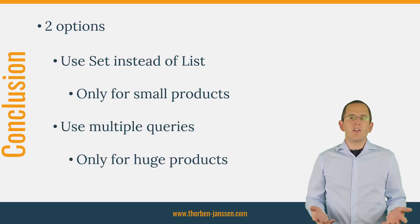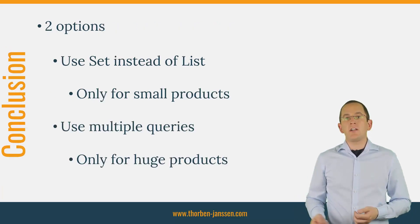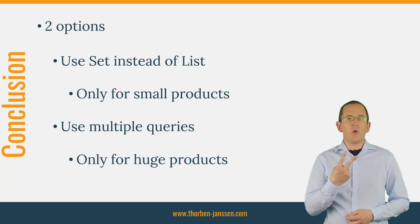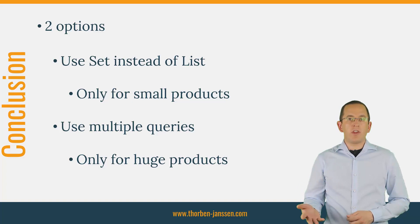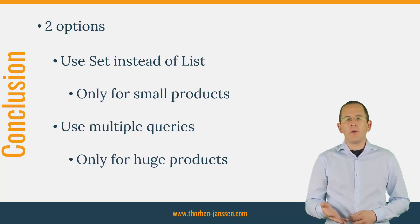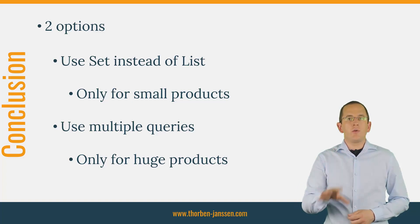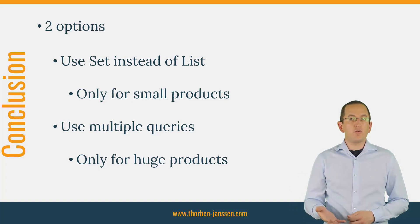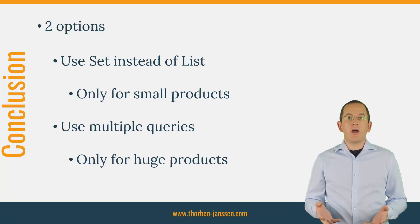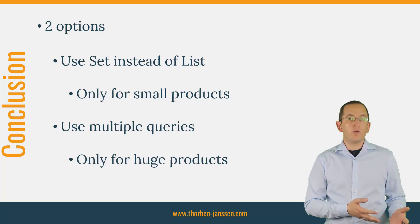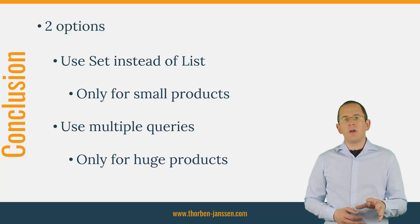As you have seen in this video, you can solve Hibernate's MultipleBagFetchException in 2 ways. You can change the data type of the attribute that maps the associations and retrieve all information in one query — the result of that query is a product, and as long as this product doesn't get too big, this approach is simple and efficient. Or you can use multiple queries to fetch the required graph of entities, which avoids a huge product and is the better approach if you need to fetch a huge amount of data.